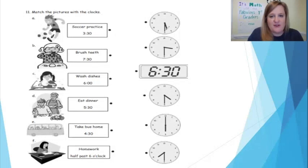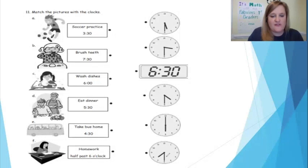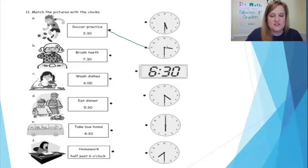This one says 5:30 or half past five. 3:30 — I think it's this one, but let me read all the clocks: 6:30, 4:30, six o'clock, and 7:30 or half past seven. So I think I'm right. I'm going to draw a line to match 3:30, the digital time, with the analog clock.